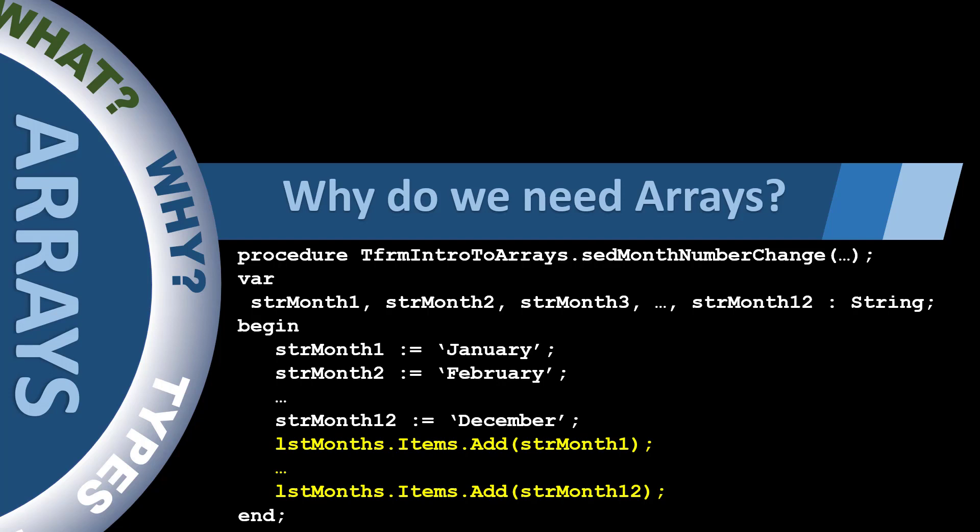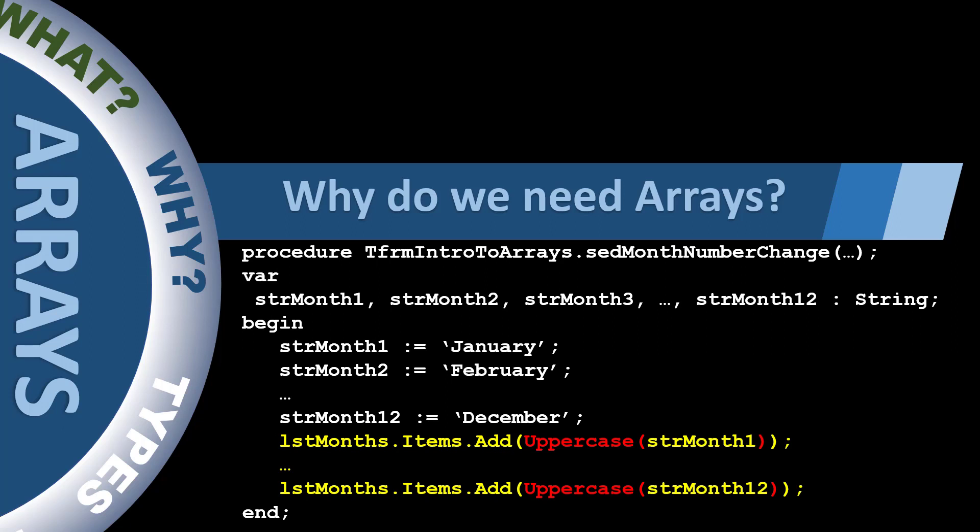First, your code becomes cluttered. Second, if you want to do additional processing on all the month names — like formatting them all to uppercase — you must do it one at a time, passing each individual variable to the uppercase function. Third, the month names are not in a particular order; there's no way for the compiler to know that March follows February, or that December is the last month. With an array you can remove the clutter, process all the months in one statement, and keep track of the order of the month names.